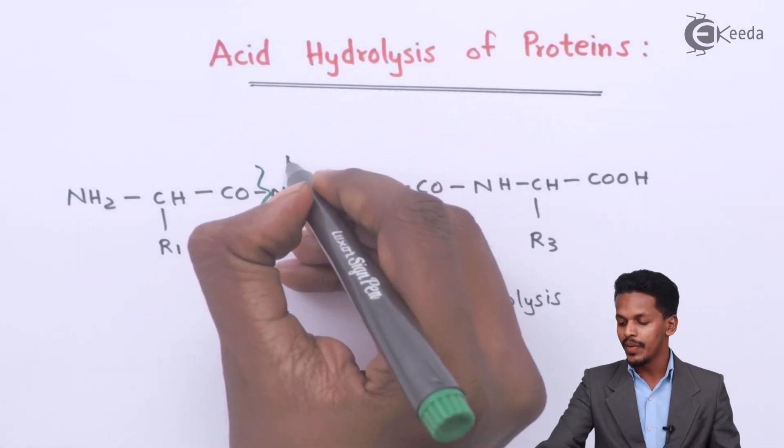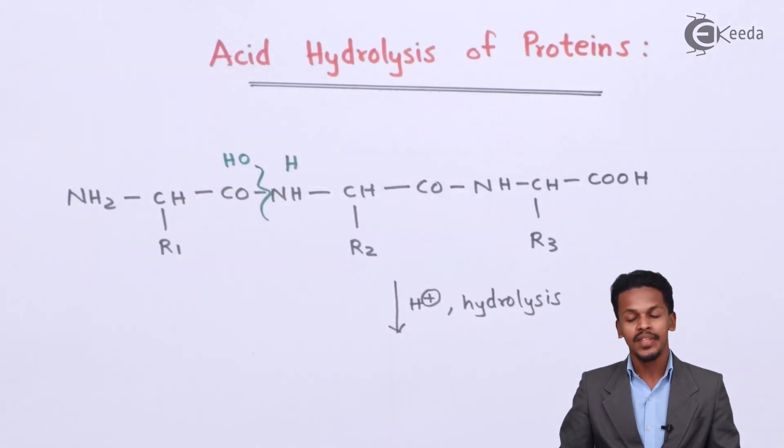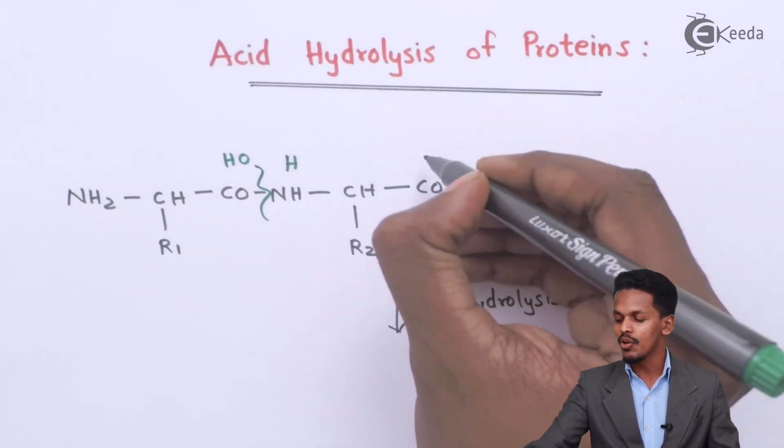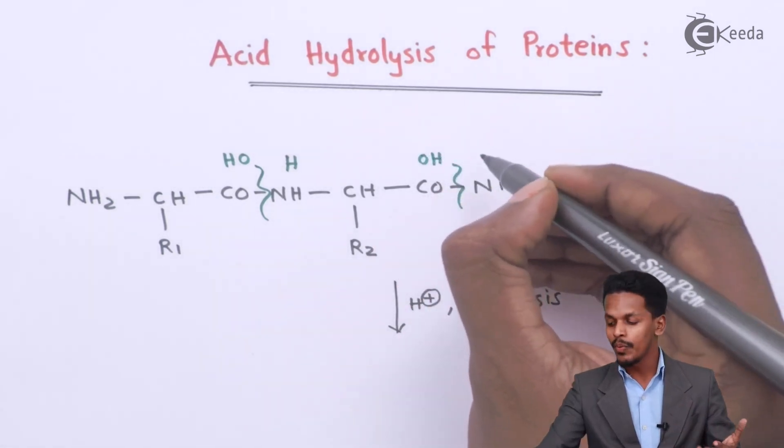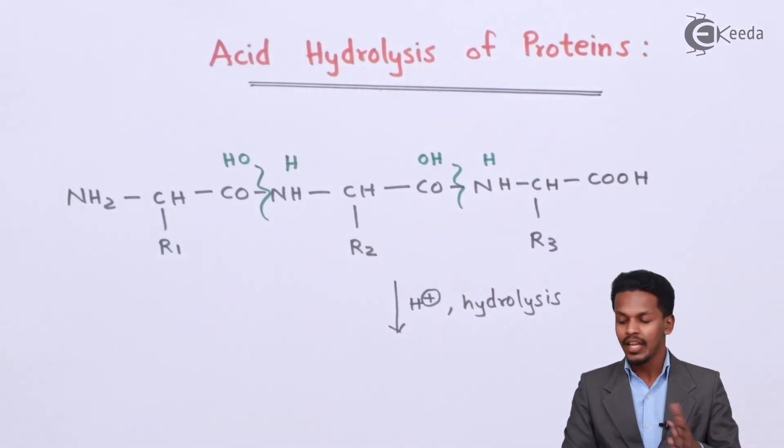During hydrolysis, if we are using water, one hydrogen atom will stay over here while the OH stays on this side. Similarly, there will be bond breaking over here and we get OH hydrolysis here and hydrogen stays here. That is how we get three different alpha amino acids.